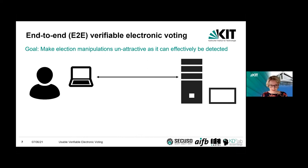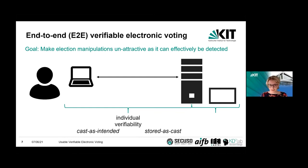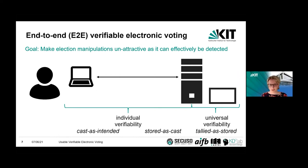What does end-to-end mean? We distinguish two parts. First, individual verifiability, which starts on the voter side and goes to the voting server, because it contains cast-as-intended verification — you want to know as a voter that your vote has been cast as intended. Secondly, you want to be sure it's stored as cast. Then there's universal verifiability, where we want to know that all votes are tallied as stored. End-to-end verifiability means you want both individual and universal verifiability.